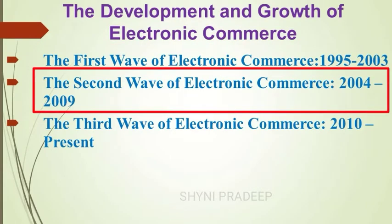The second wave of electronic commerce spans 2004 to 2009. This second wave is considered the rebirth of e-commerce after the dot com bust. It is considered a global wave, with companies doing business in many countries and in many other languages. Language translation and currency conversion were major focuses of second wave websites.